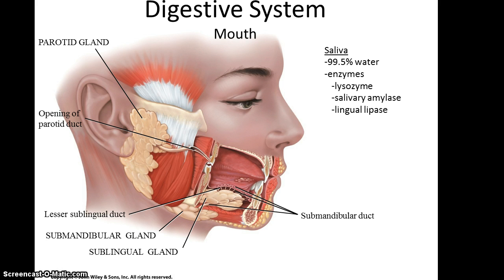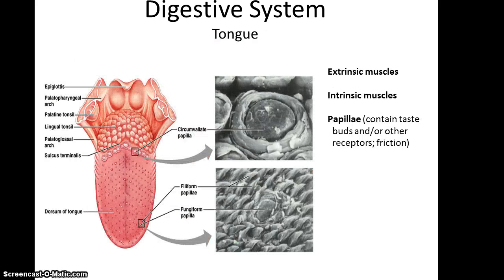Lipases break down fats. The tongue has both extrinsic muscles that attach it to other structures — such as the geniohyoid muscle — and intrinsic muscles that allow it to move, though we won't go into the specifics of those muscles. Also on the tongue are a number of papillae, which are little bumps. Some of these bumps contain taste buds for the sense of taste, and others are just there to provide friction on the tongue to help move food around.